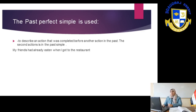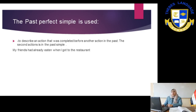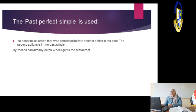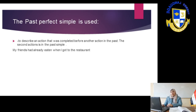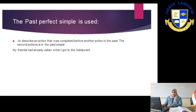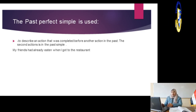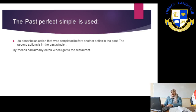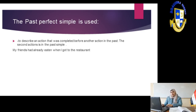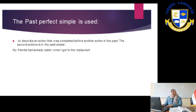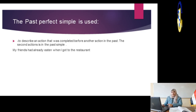Also, we can use the past perfect simple to describe an action that was completed before another one in the past. The second action is in the past simple. For example: My friends had already eaten when I got to the restaurant. Here, eating is the first action — it happened before I got to the restaurant. If two actions happened and one came before the other, we use past perfect simple for the first and past simple for the second. Past simple is the second form of the verb — like did, played, put, began, drank, swam.